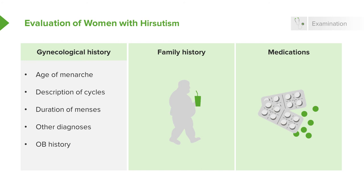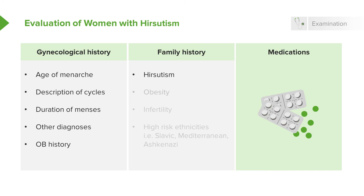We also want to know a family history: does her mother or sister have hirsutism? Is the family generally obese? Has there been a history of infertility in her family? And what is her ethnicity, as certain ethnicities can have higher incidences of hirsutism associated with certain diseases, such as CAH. Finally, you'd like to know what medications the patient is taking, as some can cause an issue.